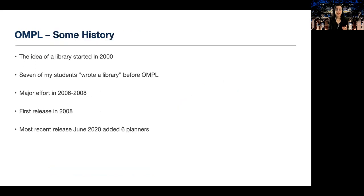The idea of the library started around 2000. In fact, I wrote the beginnings of the library, and then I counted five of my students that completely rewrote the library, and they did not like what the person before them had done. We were all motivated by the observation that all sampling-based planners use a well-defined set of primitives that should be implemented robustly. The major effort, however, that resulted in OMPL happened between 2006 and 2008. The first release was in 2008, and the most recent release is in June of 2020, and this release added six new planners to the library.